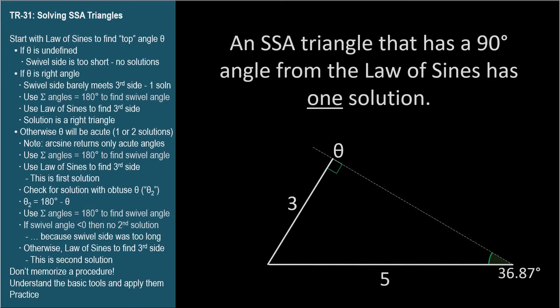When applying the law of sines to the given measures, getting a right angle describes the case where the swivel side just barely reaches the third side, so there's only one solution. To finish solving this triangle, we'd find the third angle and then apply the law of sines to find the length of its opposite side. I'll show the answers if you'd like to follow along for the practice.